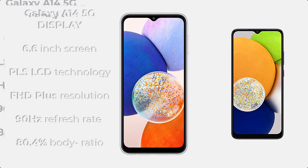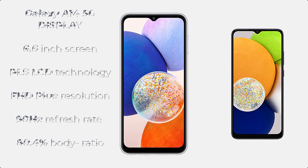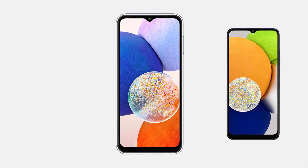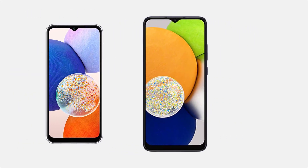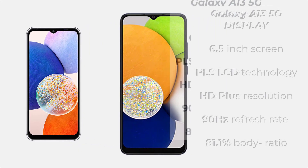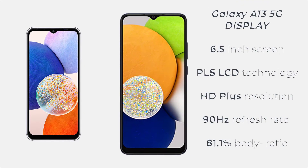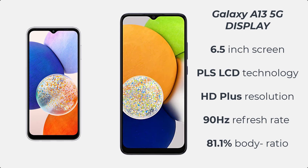The Samsung Galaxy A14 has a 6.6-inch screen with PLS LCD technology, FHD+ resolution, 90Hz refresh rate, and 80% screen-to-body ratio. The Galaxy A13 5G comes with a 6.5-inch screen with PLS LCD technology, HD+ resolution, 90Hz refresh rate, and 81% screen-to-body ratio.